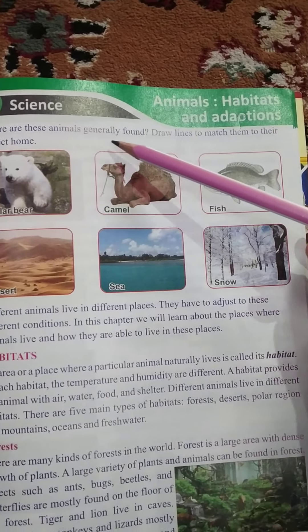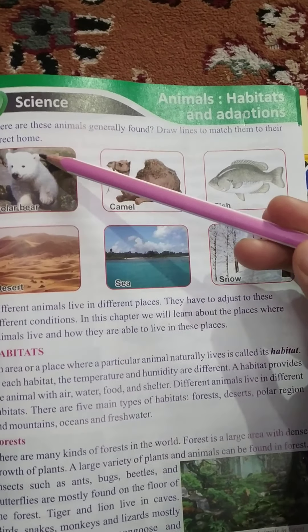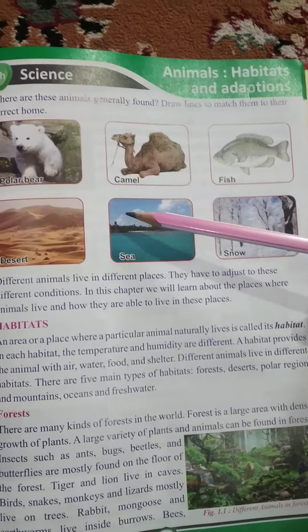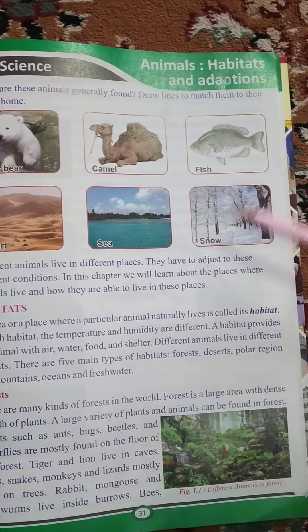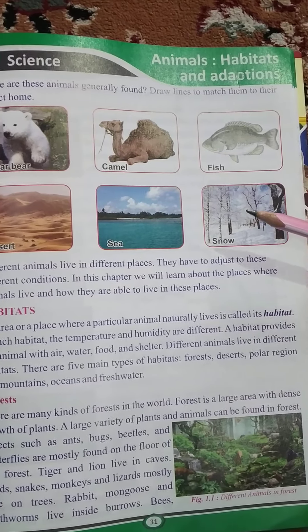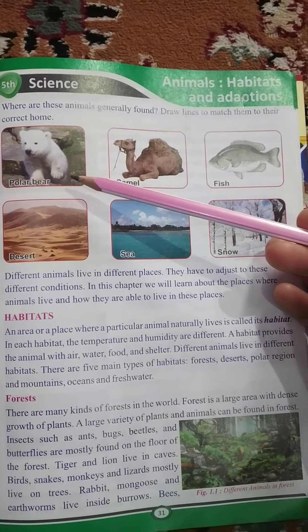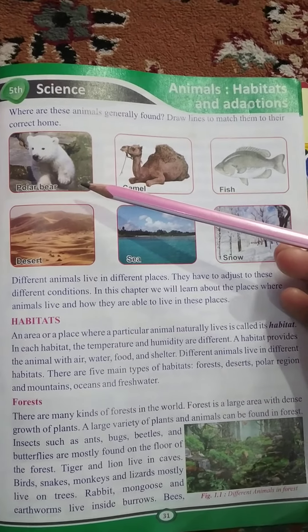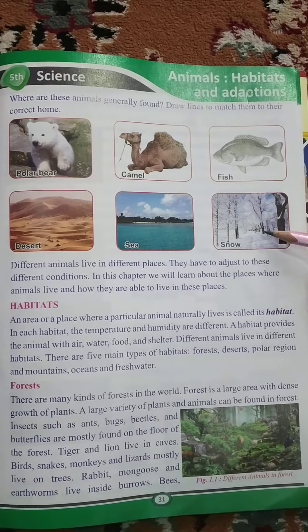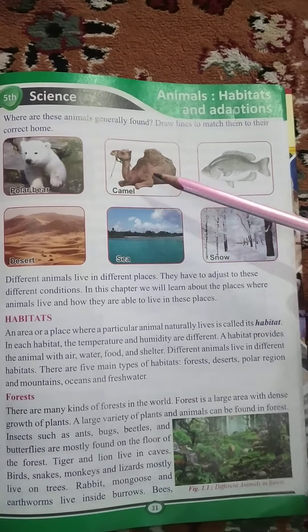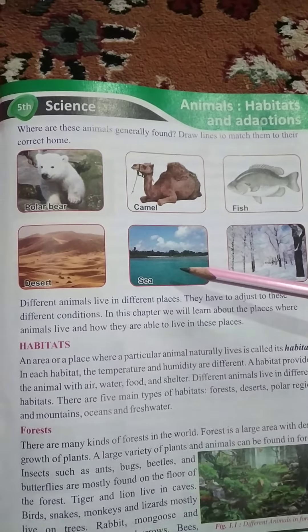Where are these animals generally found? Draw lines to match them to their correct home. There are some animals and some places — match these animals to where they are found. The first animal is polar bear, which is found in snow areas. The camel is found in desert areas, and fish is found in the sea.